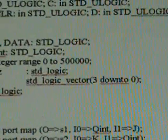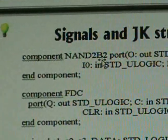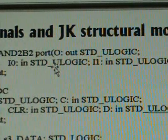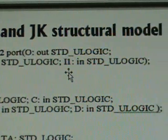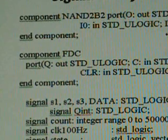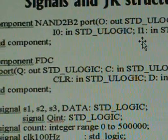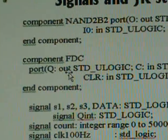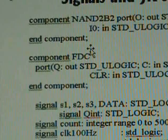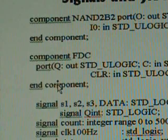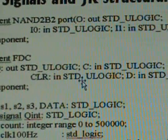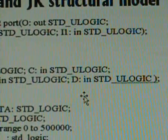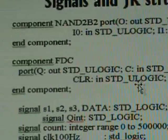Another component is a NAND gate with two inputs where both inputs are inverted. Its port has O as the output, I0 and I1 as the two inputs, all standard U logic. From our derivation, those are the gates we need. We also need a data flip-flop, called by Xilinx as FDC — meaning data flip-flop with clear input — whose ports are Q as the output, C for the clock, CLR for the clear, and D for the data input.